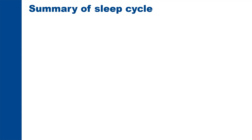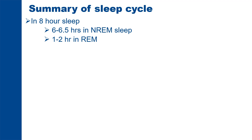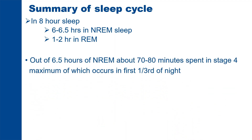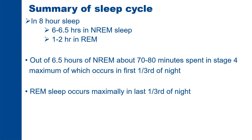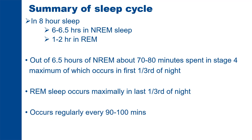To summarize the sleep cycle: in an eight-hour sleep, six to six and a half hours are spent in NREM sleep and one to two hours in REM sleep. Out of the six and a half hours of non-REM sleep, about 70 to 80 minutes are spent in stage 4. Maximum stage 4 sleep occurs in the first one-third of the night; in the later part, REM sleep follows stage 3 NREM sleep directly, bypassing stage 4. REM sleep occurs maximally in the last one-third of the night, regularly every 90 to 100 minutes, with four to five REM periods in the whole sleep cycle.